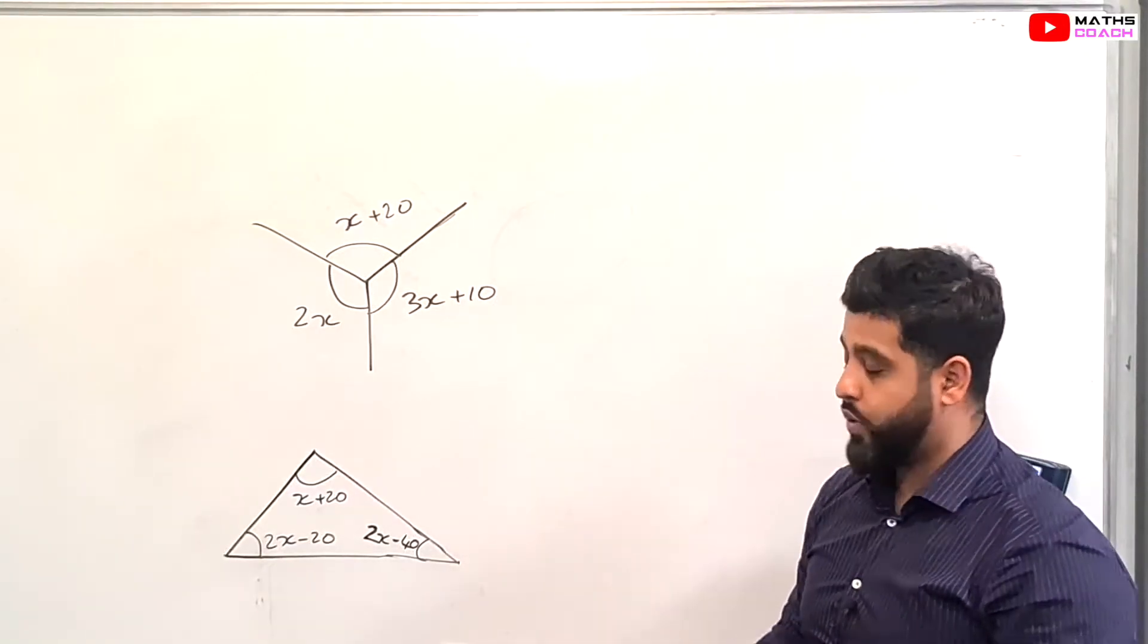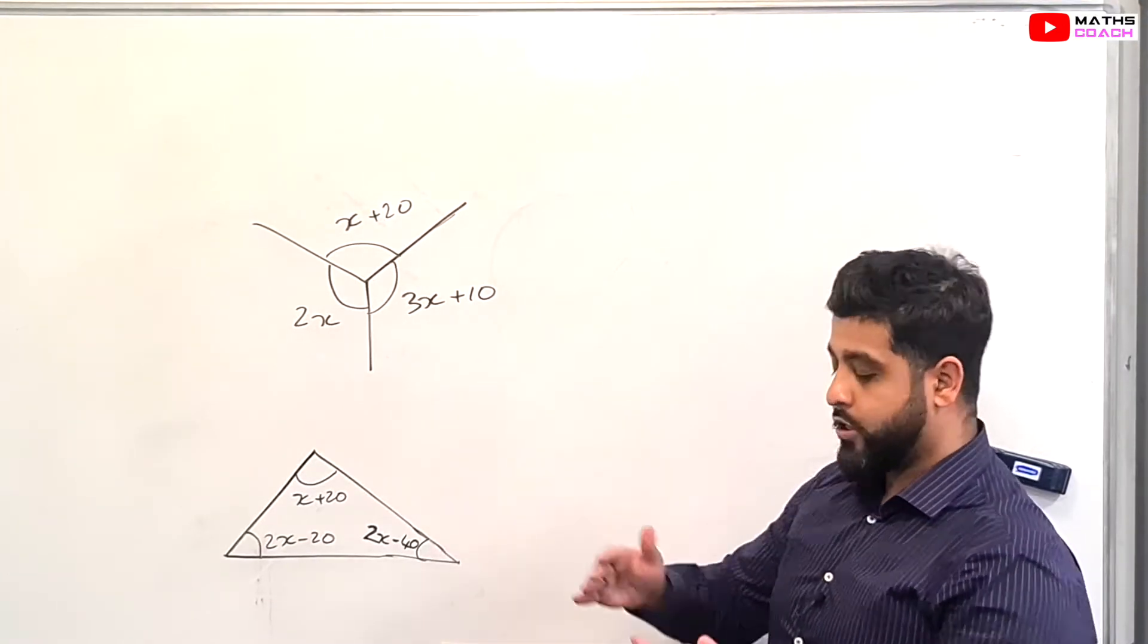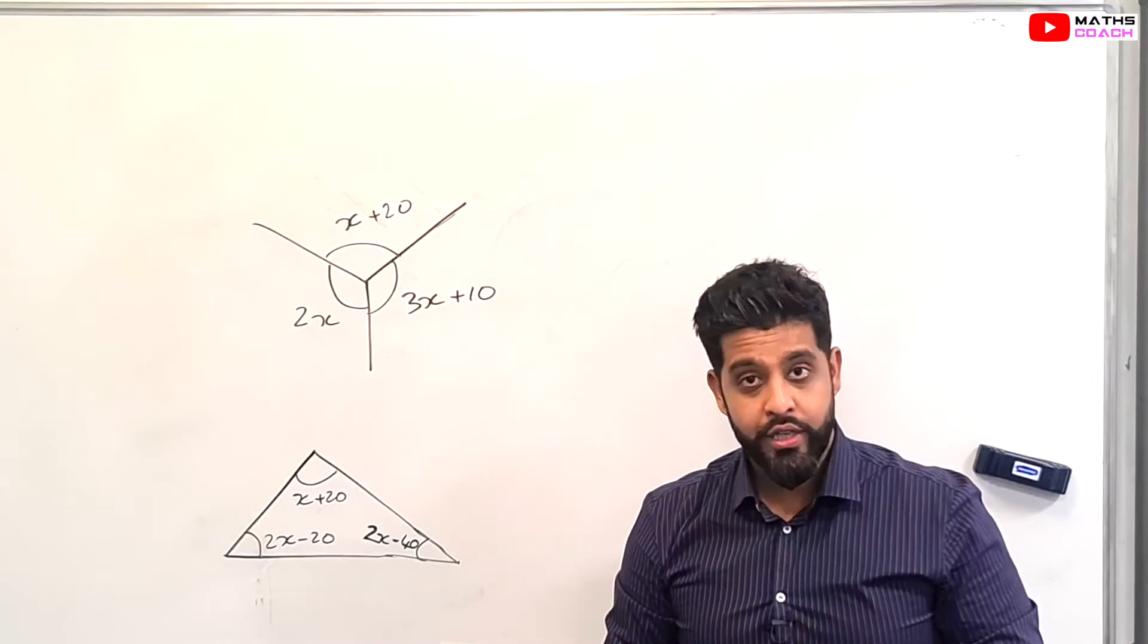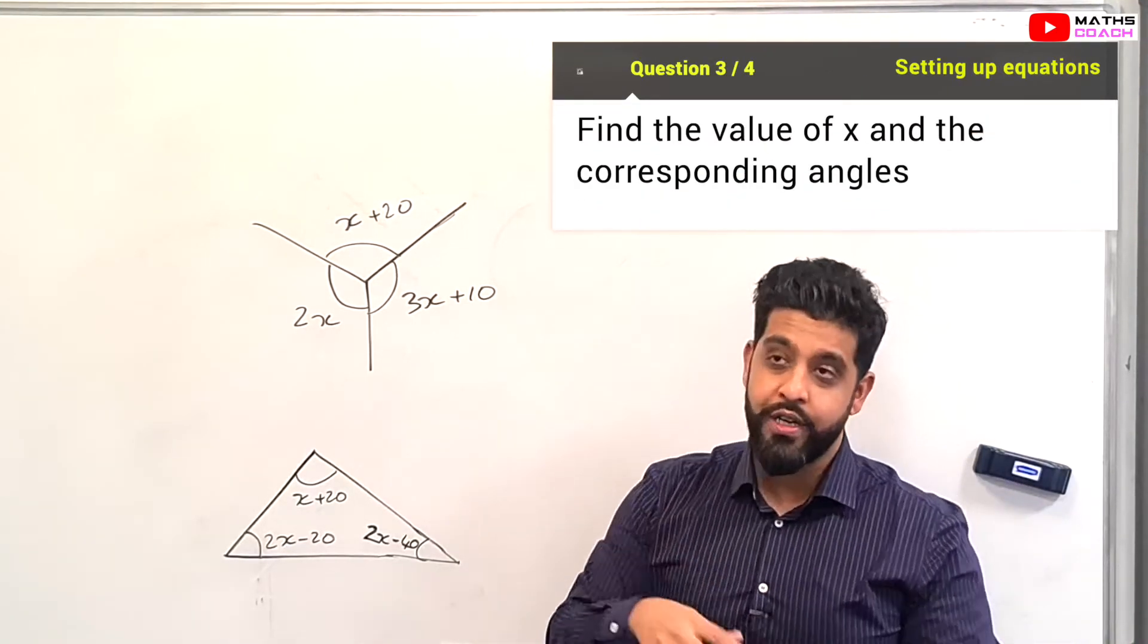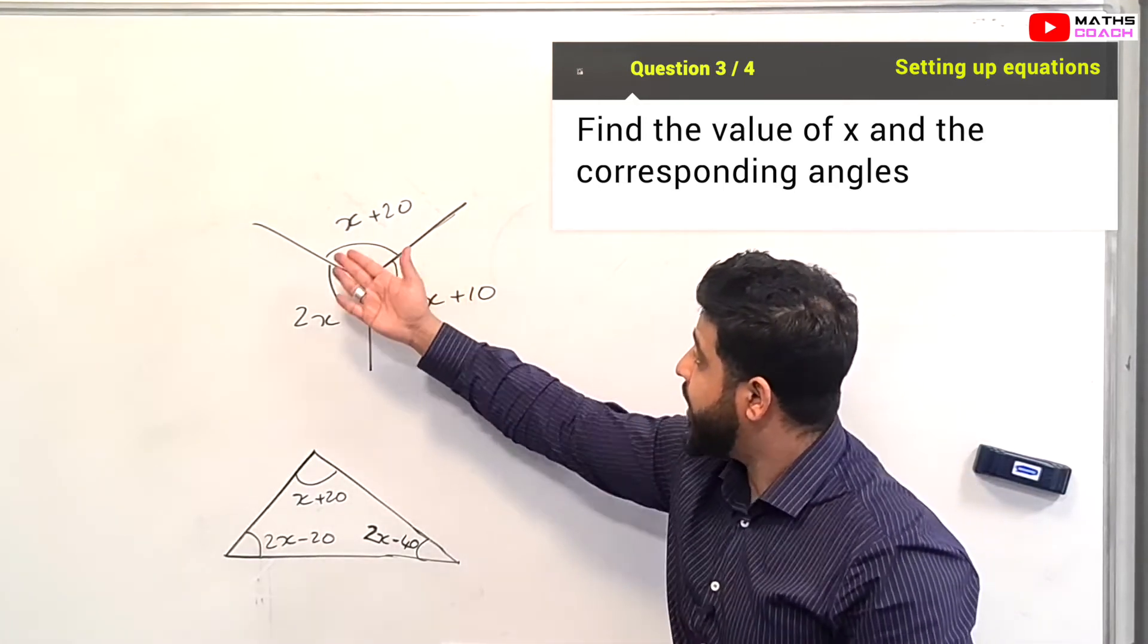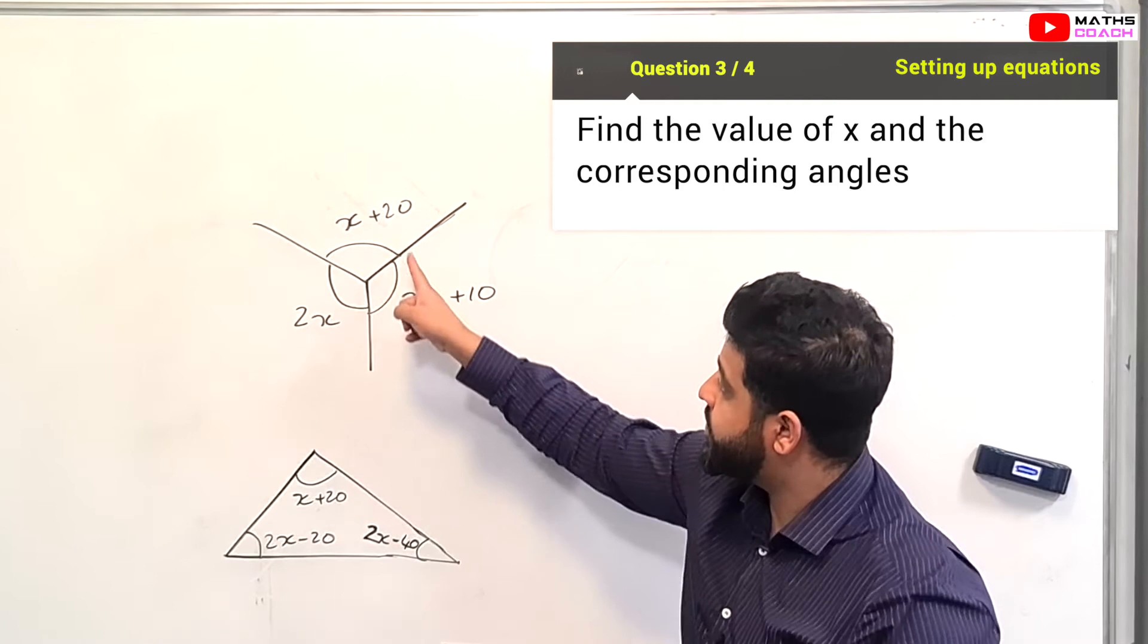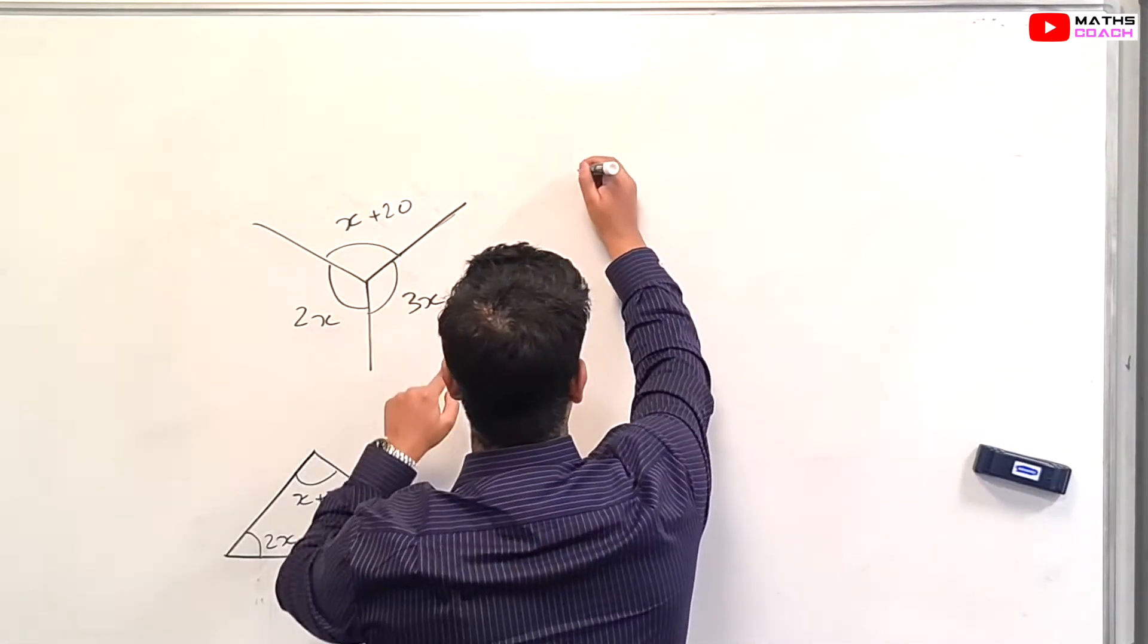So over to our next few questions, where you will be tested on various angles inside shapes. For example, angles on a straight line equal 180, angles on a point equal 360, angles in a triangle equal 180, and so forth. We have an angle on a point here. All these three angles add up to 360.